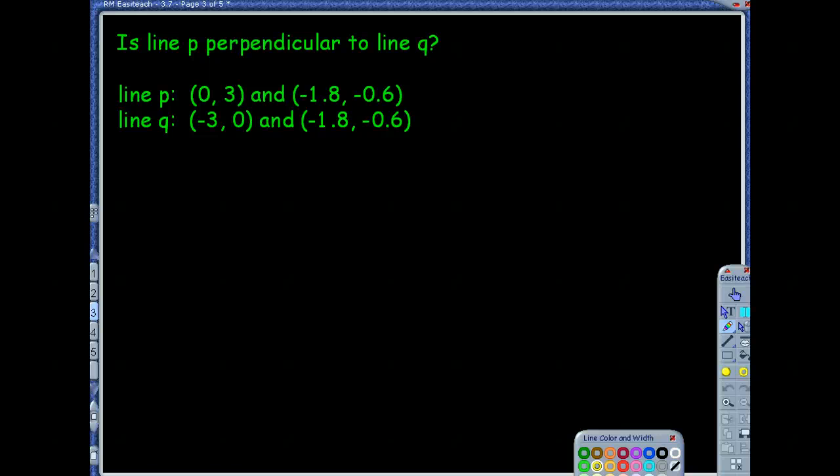So the first exam question says, is line P perpendicular to line Q? So how are we going to be able to do this? Are we going to graph this and kind of get a visual of what's happening? We don't really need to. We just really need to look at their slopes.